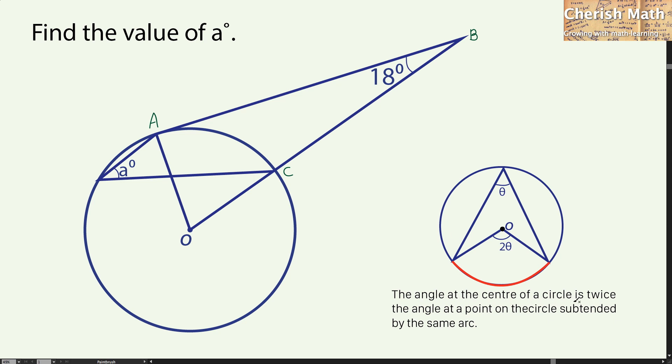The angle at the center of the circle is twice the angle at a point on the circle subtended by the same arc. So this means that this is theta, and at the center it turns to 2 theta. The same thing is going to happen here for a degree.